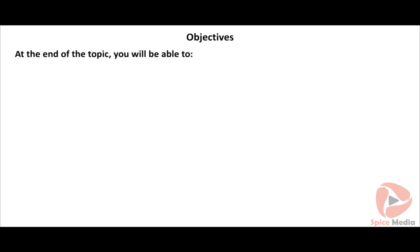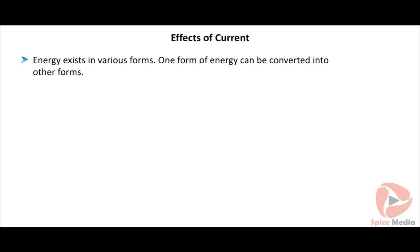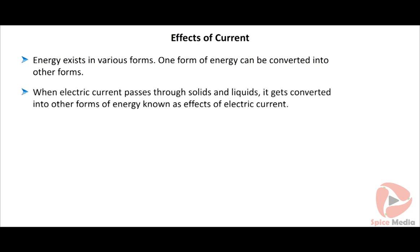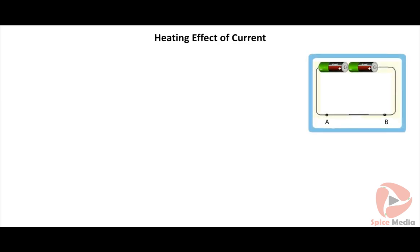At the end of this topic, you will be able to explain the heating effect of current, list down household appliances that work on the principle of the heating effect of current, and describe the working of electrical heating devices. Energy exists in various forms, and one form can be converted into another. When electric current passes through certain conductors, it gets converted into another form of energy — this is known as the effects of electric current.